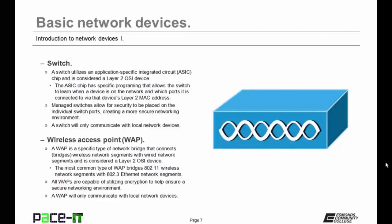Then there is the wireless access point, or WAP. A WAP is a specific type of network bridge that connects or bridges a wireless network segment with a wired network segment, and it is also considered a Layer 2 OSI device. The most common type of WAP bridges an 802.11 wireless network with an 802.3 Ethernet network segment. All wireless access points are capable of utilizing encryption to help ensure a secure networking environment, so you should ensure that all of your WAPs have encryption enabled. A WAP will also only communicate with local network devices, unless it's a wireless router.